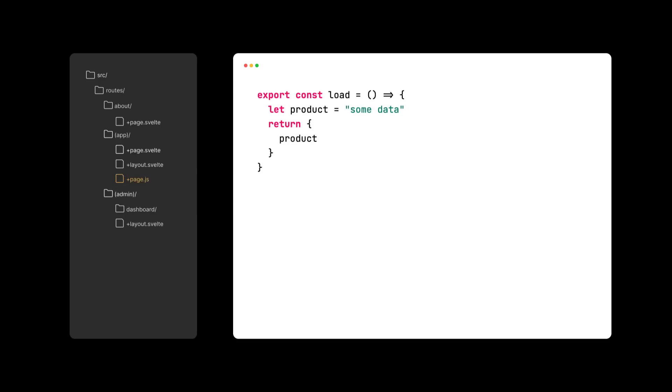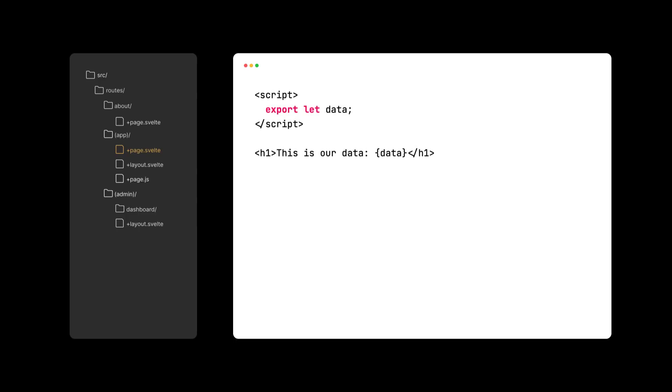Loading data into a page the new way would be done like this. First, we need to create a page.js file that calls the load function, and then within our page.svelte file we just export our data prop. The data returned from our load function is available via this prop.